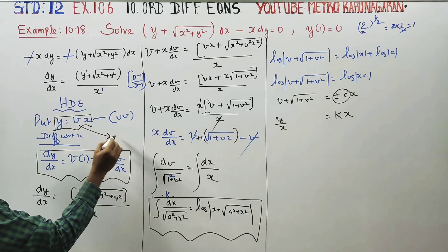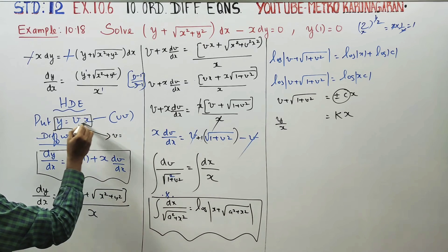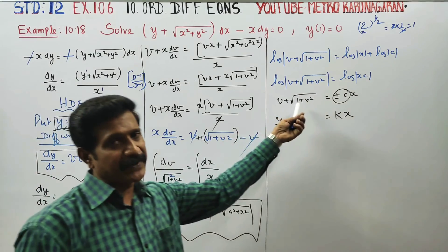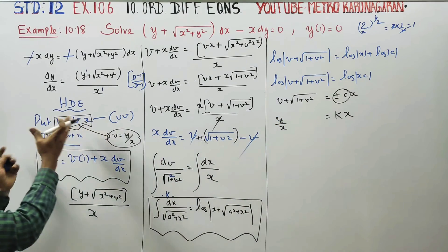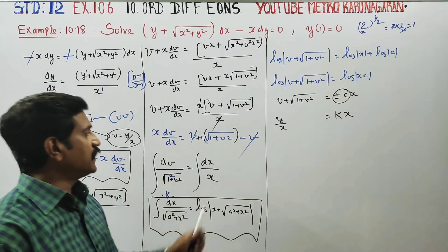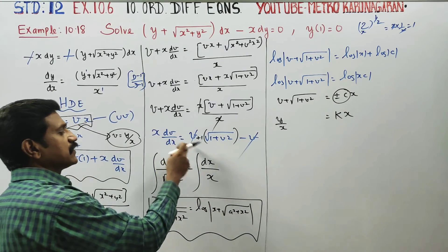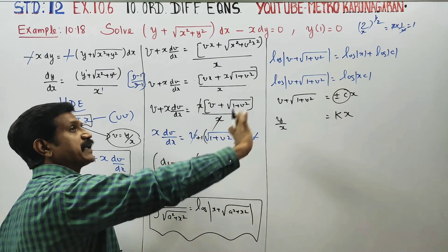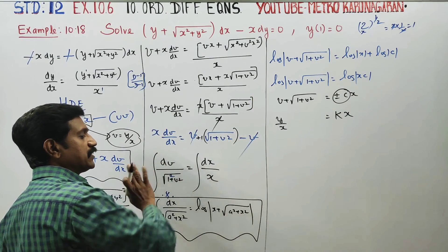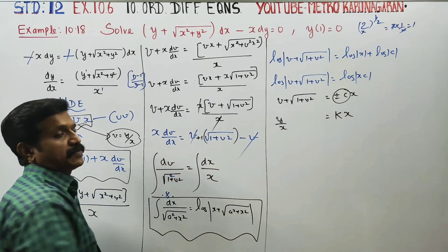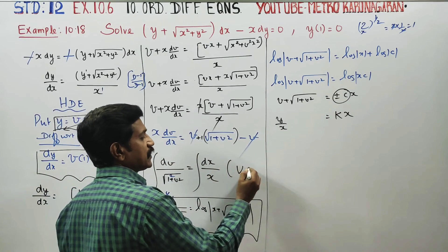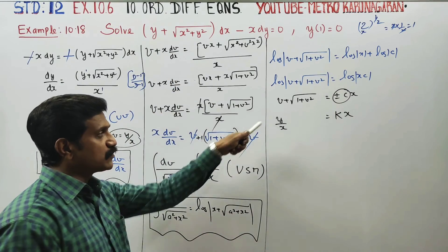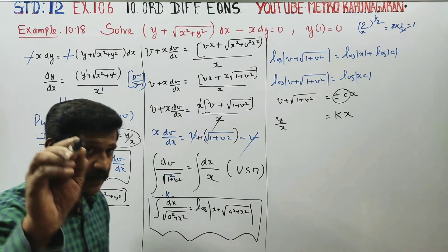What is v? v is equal to y by x. This was a homogeneous equation solved by variable separable method — separating v terms and x terms, then integrating both sides.